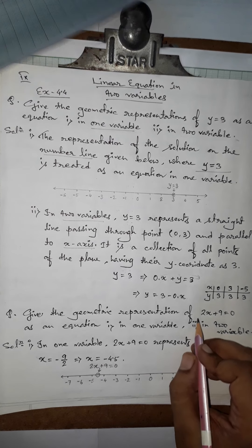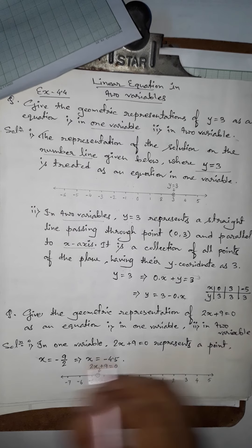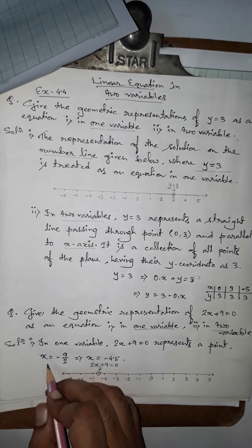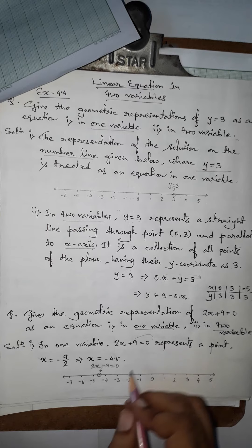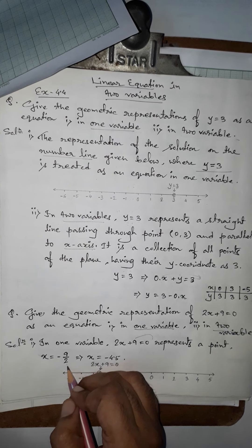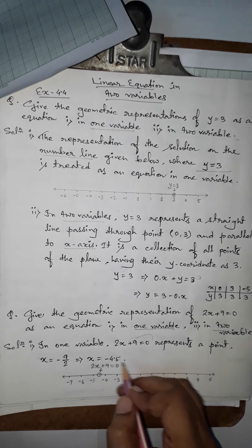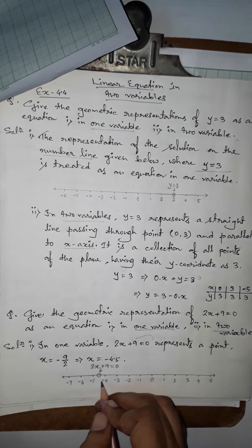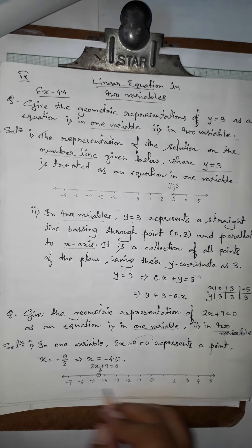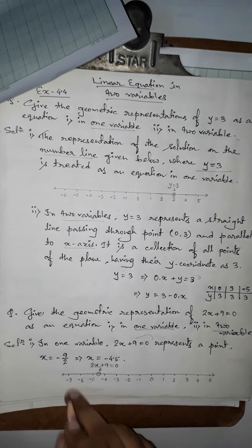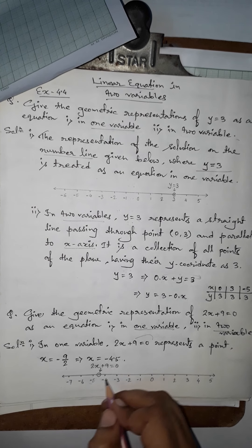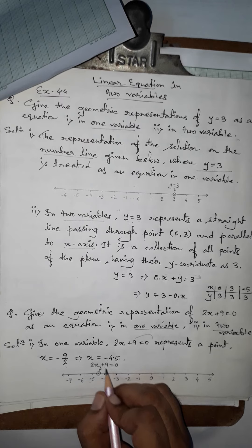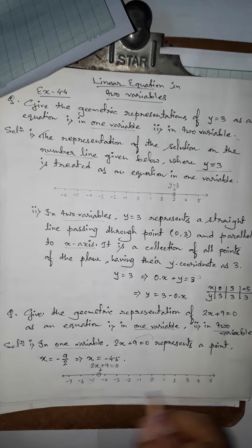The next problem is: give the geometric representation of 2x + 9 = 0 as an equation in one variable and two variables. In one variable, 2x + 9 = 0 gives x = −9/2, which is −4.5. On the number line, −4.5 lies between −4 and −5, at the midpoint. This point is marked and represents the solution for 2x + 9 = 0 when considered as a one-variable equation.